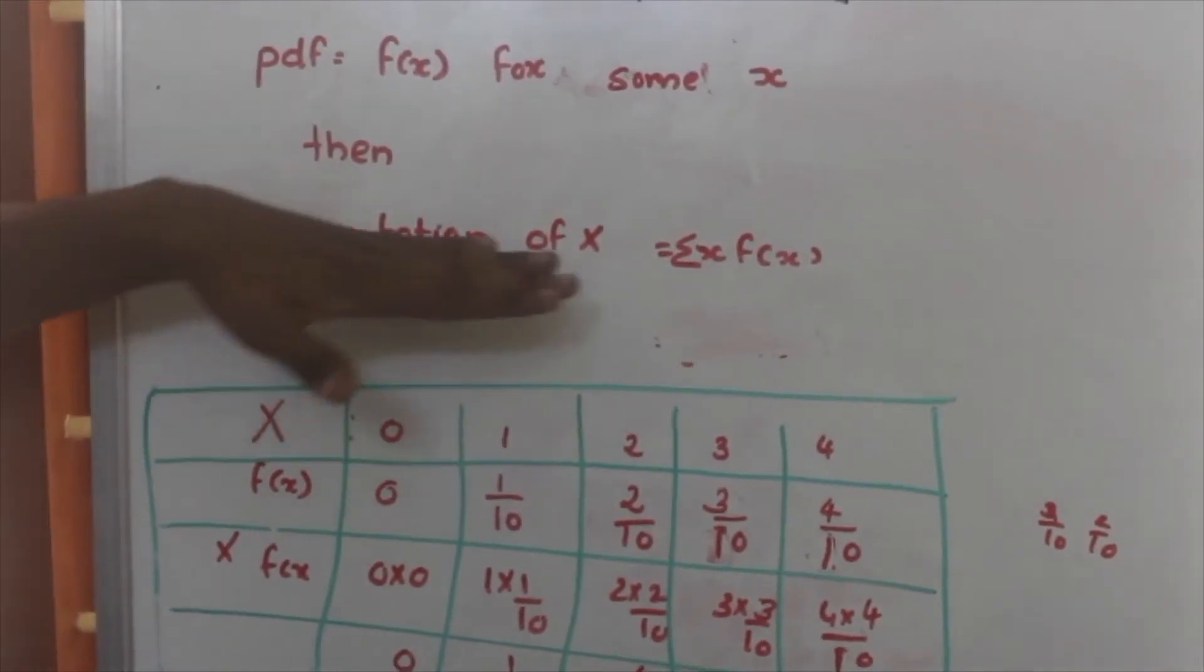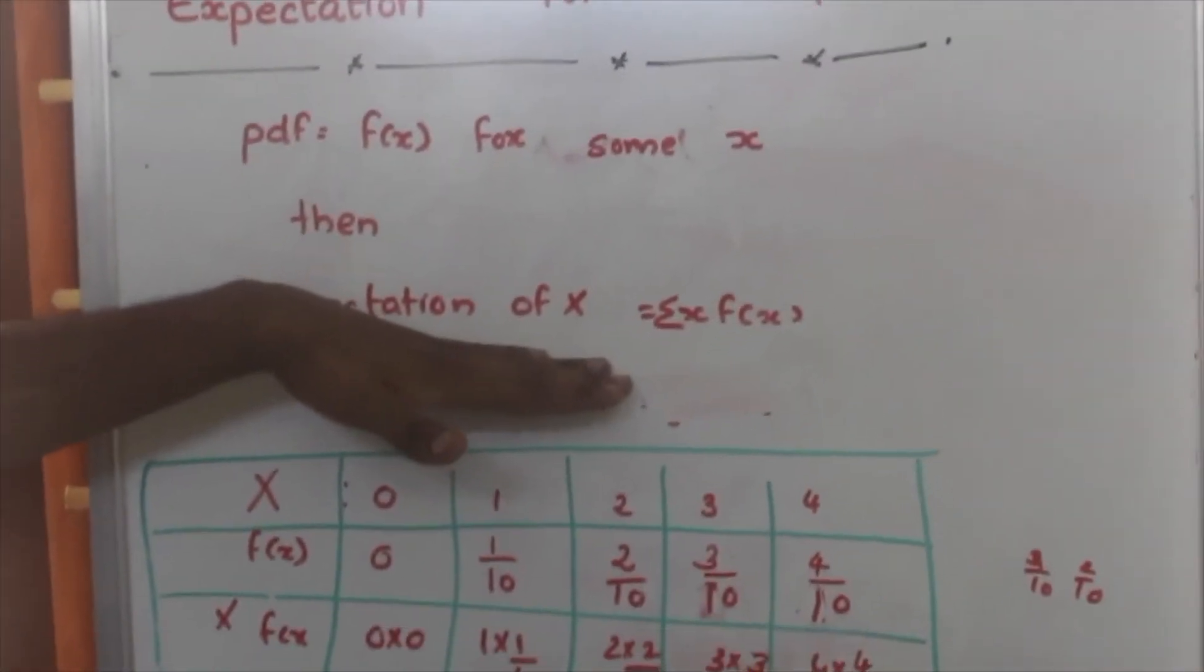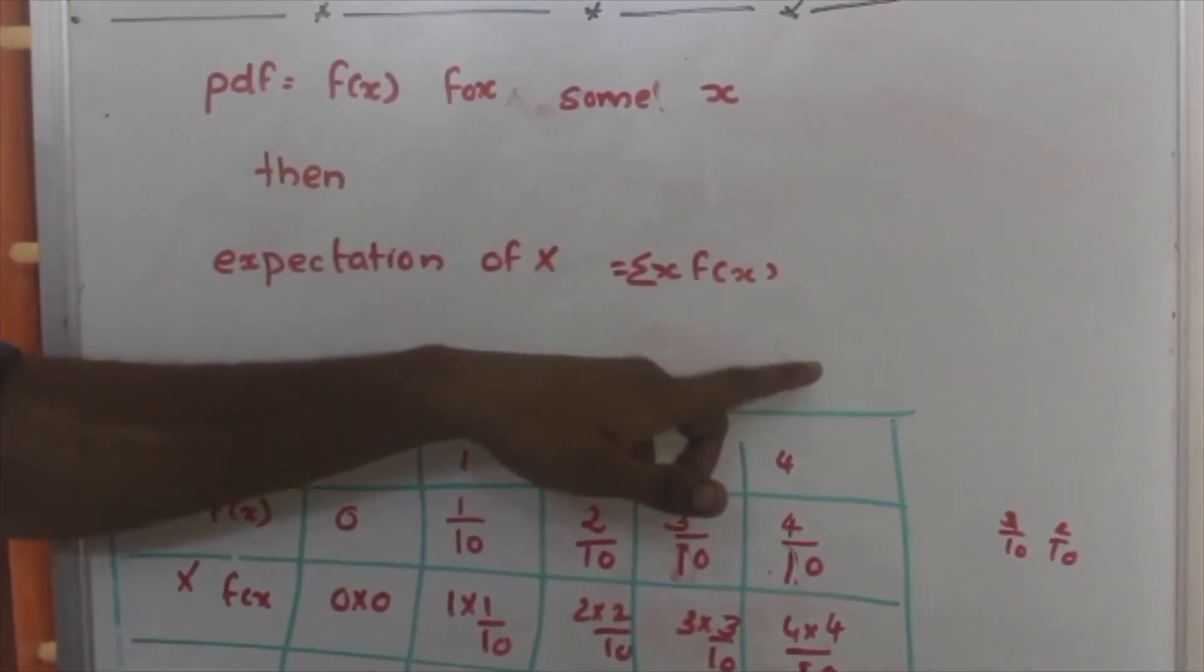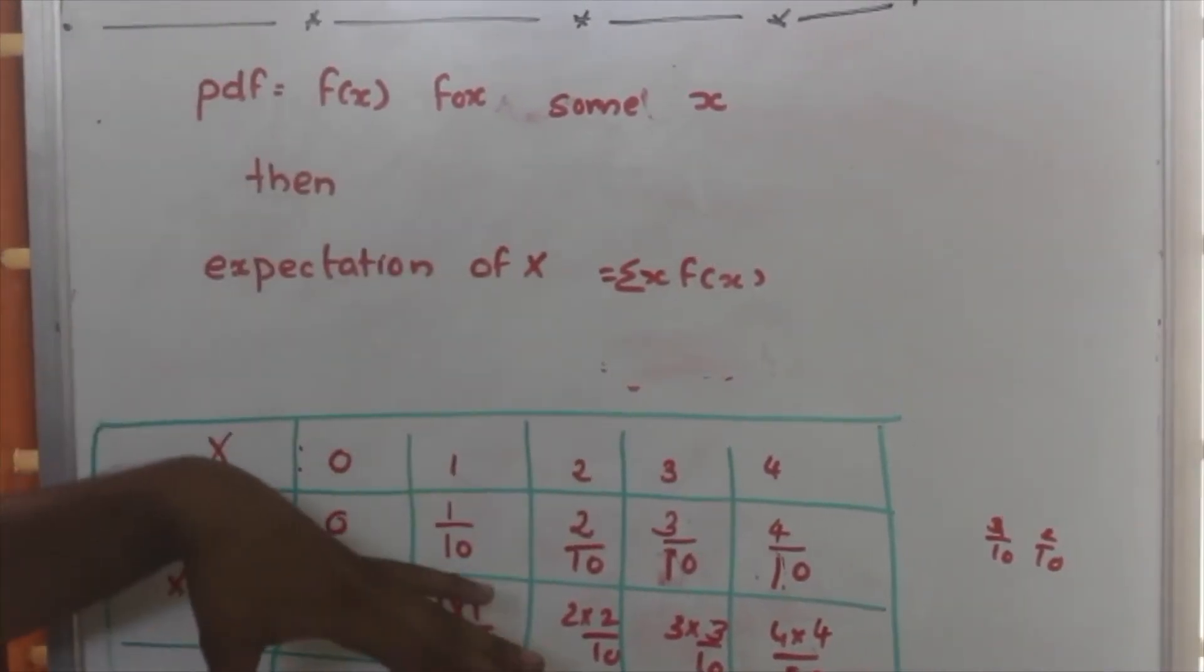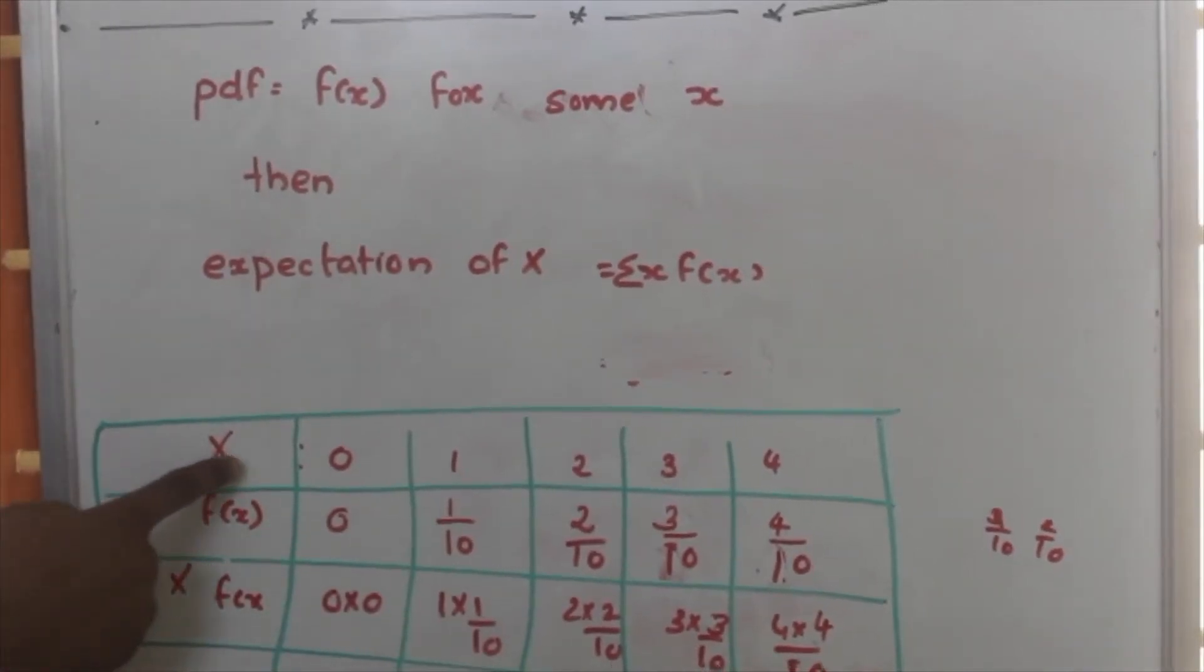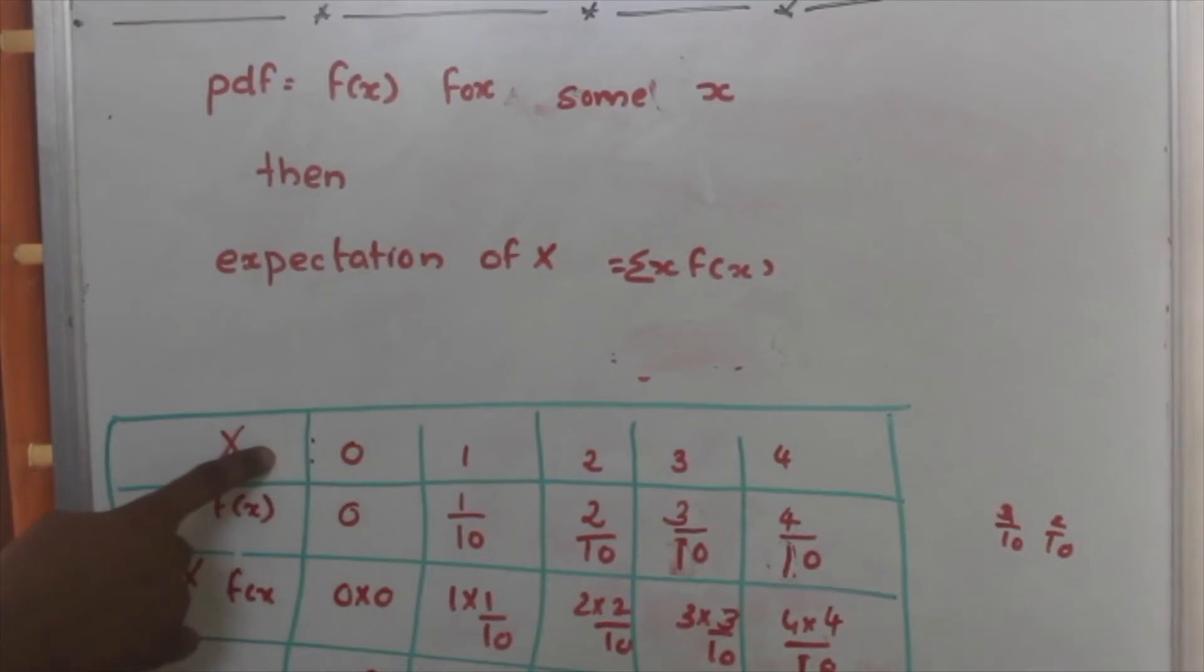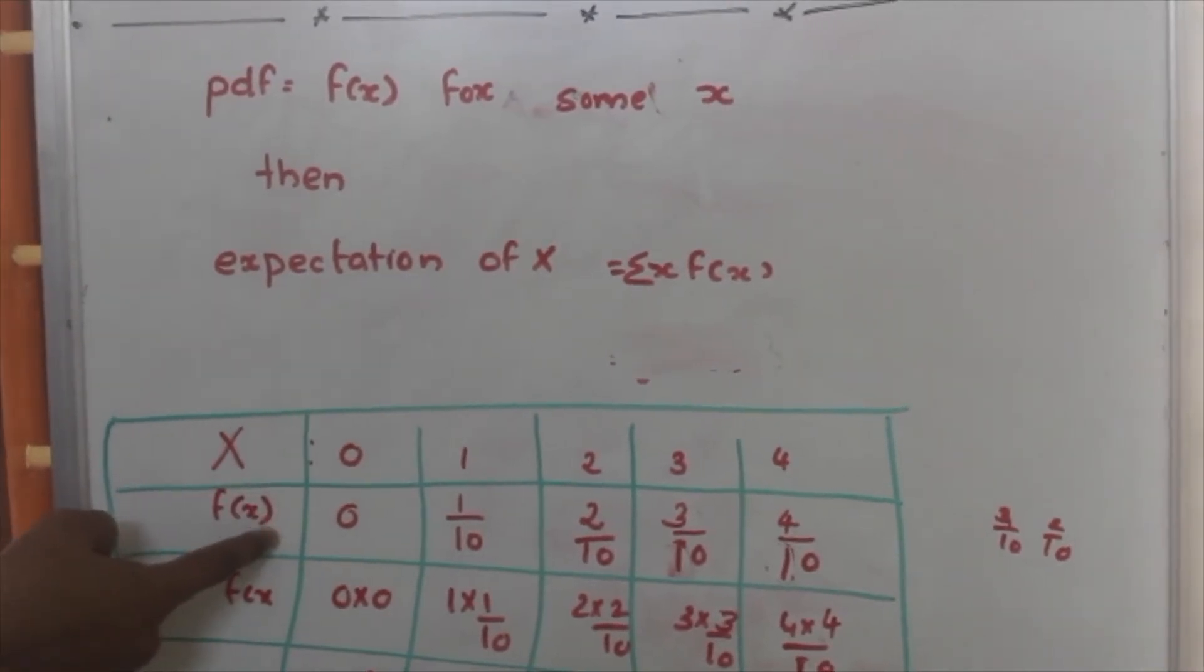Now, expectation of x is equal to x into - first we have to find x into f of x, then we have to find the sum of them. So, here we are having x, we are having f of x.